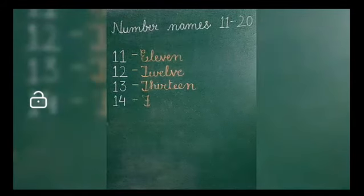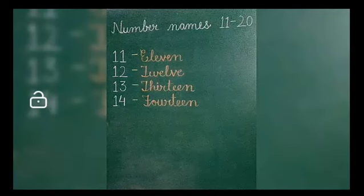Now, the next number name is 14, one four, 14. So let's read the spelling. Kids, here OU vowel blend is there and OU vowel blend has four sounds and O is one of them. And in the spelling of 14, we read OU as O. FOURTEEN, FOURTEEN, FOURTEEN.